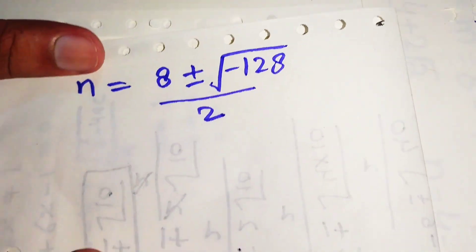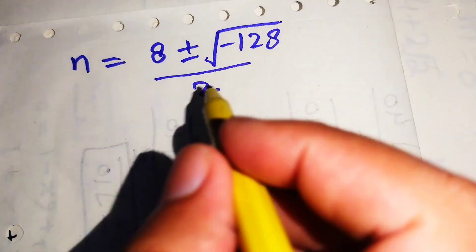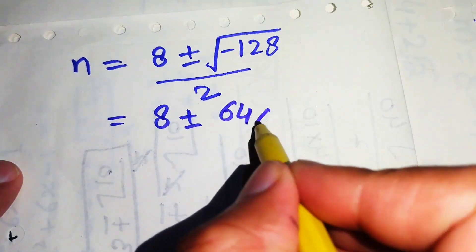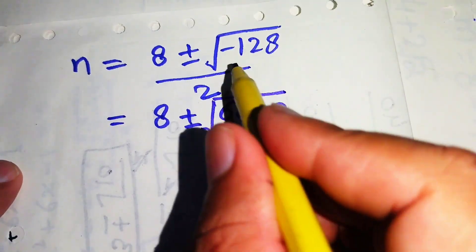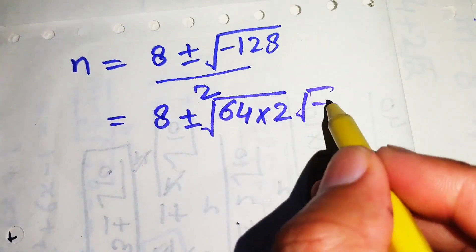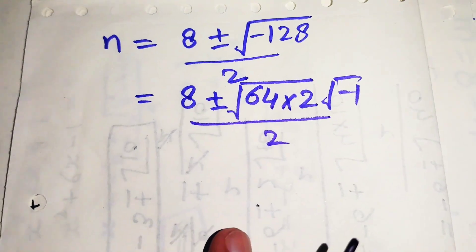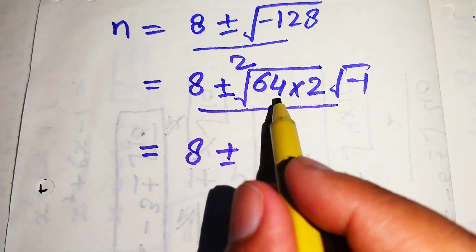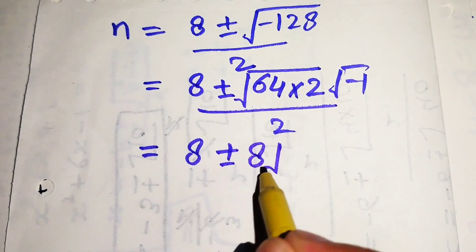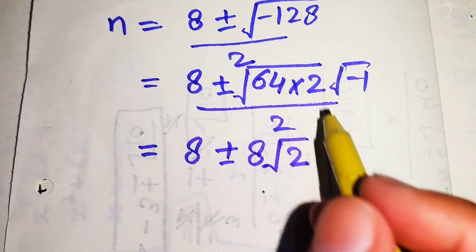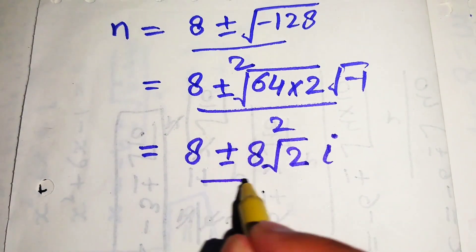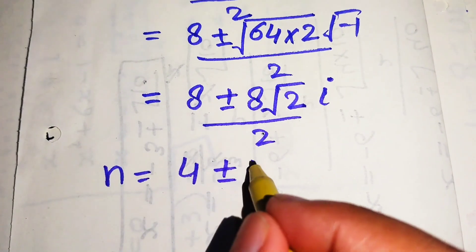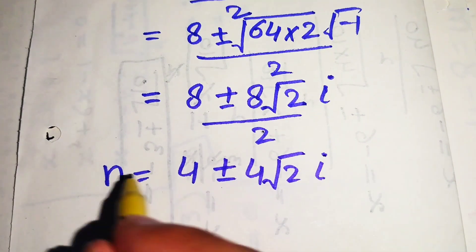Since the discriminant is negative, we rewrite minus 128 as minus 1 times 64 times 2. The square root of 64 is 8, and the square root of minus 1 is iota (i). So n equals 8 plus or minus 8√2·i, divided by 2, which simplifies to n equals 4 plus or minus 4√2·i. These are two complex values.